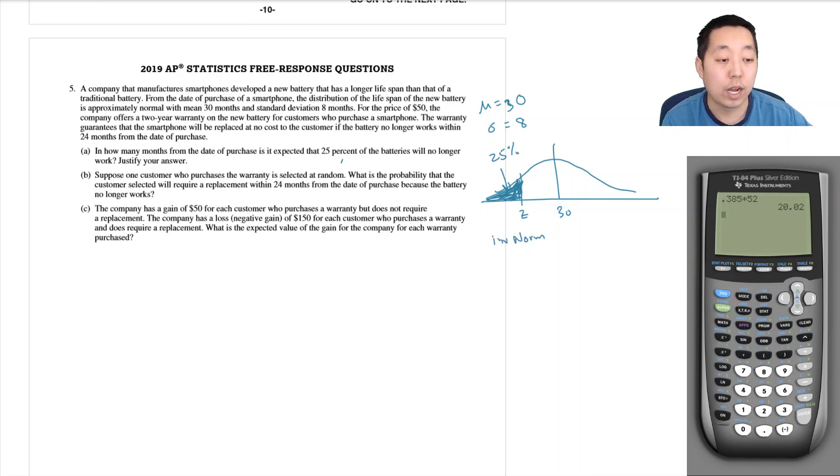Going to inverse norm—inverse norm is always cumulative, it always gives you an area to the left—so you put 0.25, mean 30, standard deviation is 8. So I get this z value here would have been 24.604, and that's how many months.